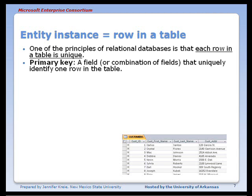And that brings into play the term primary key, a field or combination of fields that uniquely identifies one row in a table.